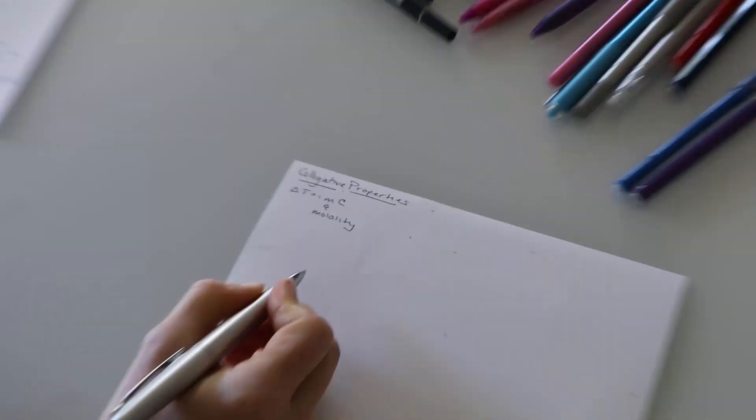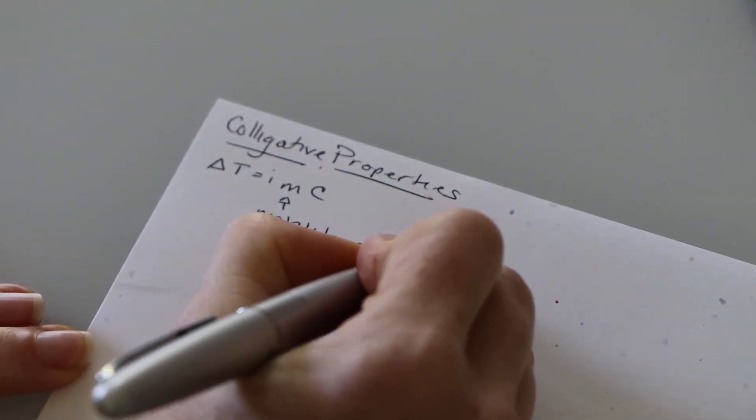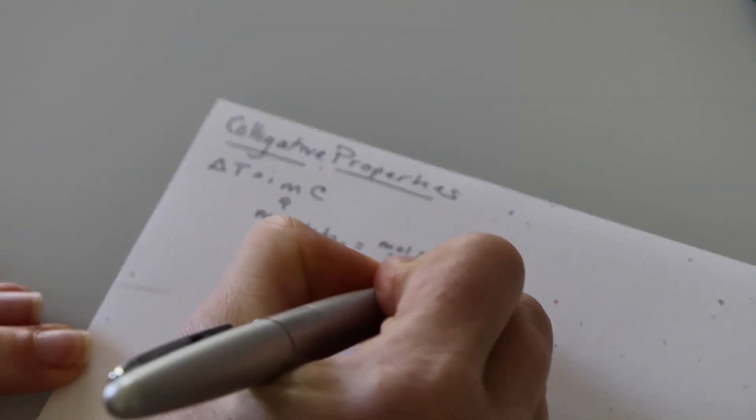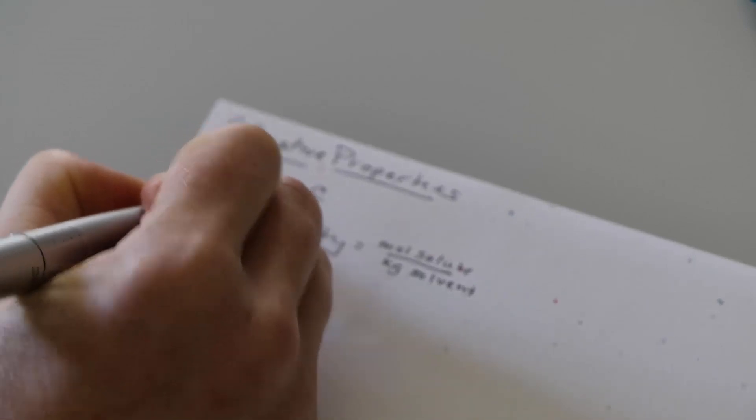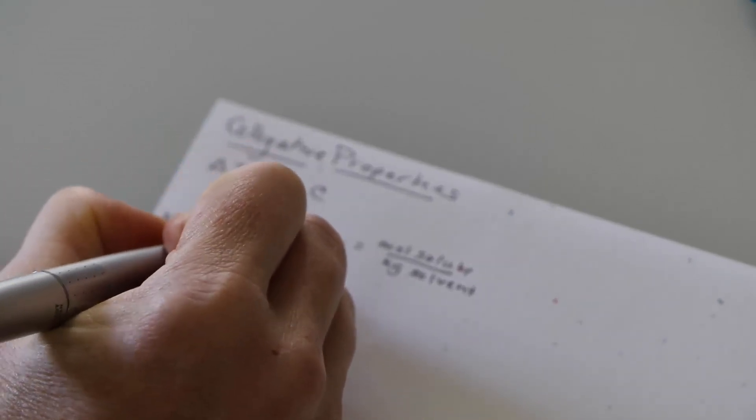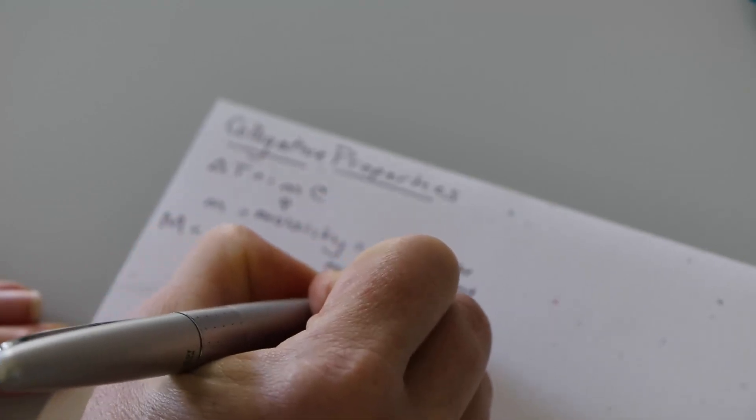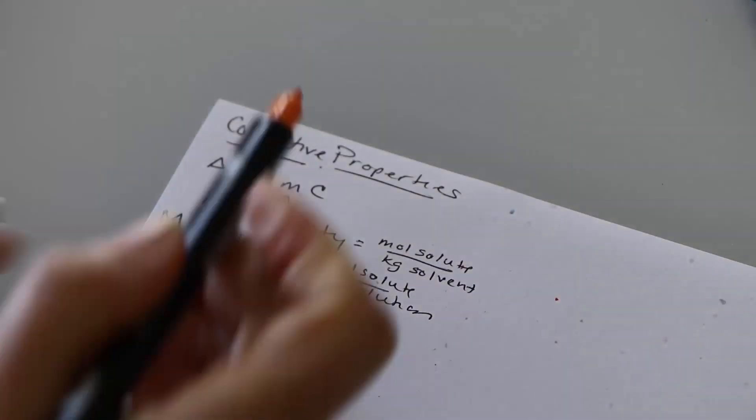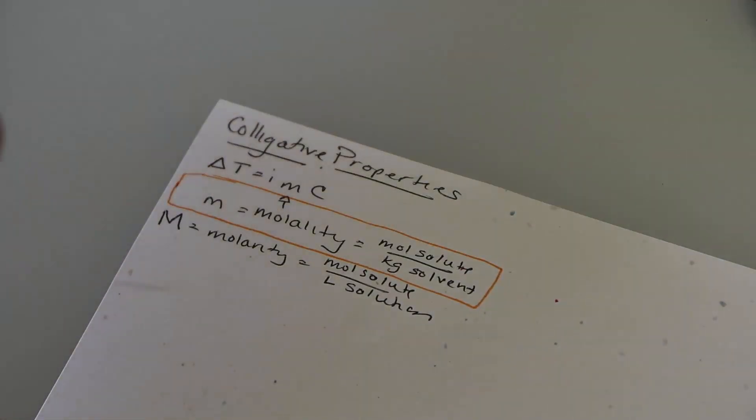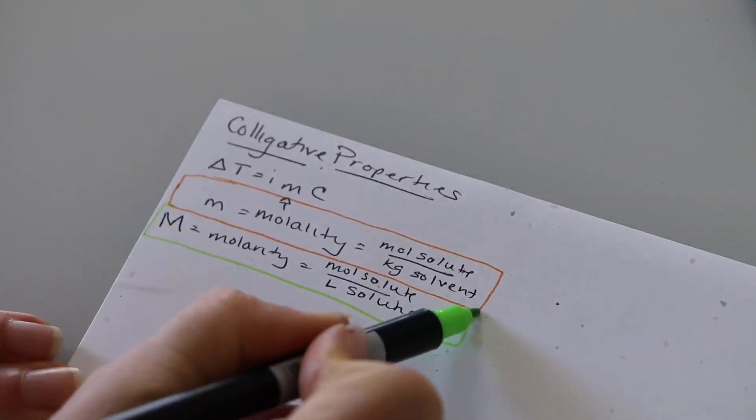So the change in temperature is equal to i the Van't Hoff constant times M the molality times some C constant which you would typically be given somewhere. So lowercase m the molality is the moles of solute over the kilograms of solvent. Capital M molarity is different. It's the moles of solute per liters of solution.